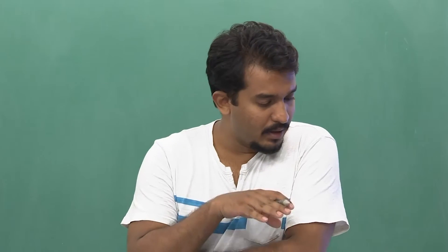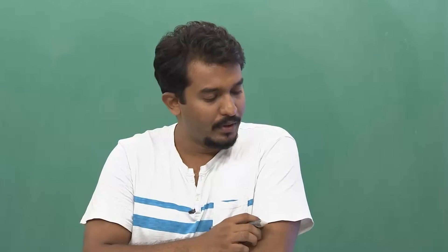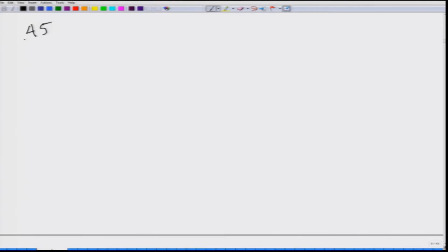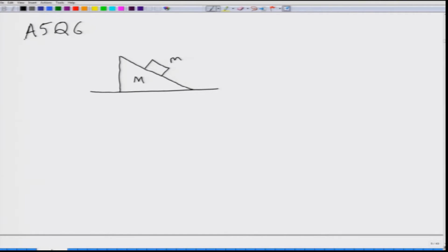Let us move to assignment 5 which contains problems from motion of particles. The first question is question 6 from assignment 5. This is a fairly simple question but we will learn how to use constraints. The problem consists of a small block of mass m being kept on a larger wedge of mass capital M. The block is going to move along the slope of the wedge.